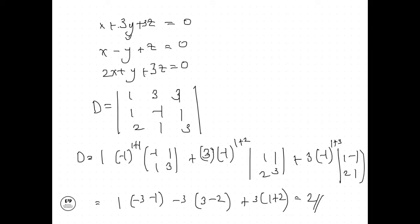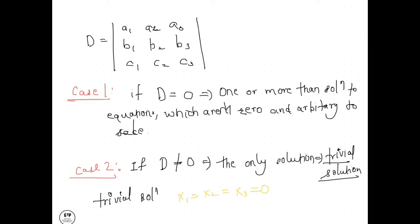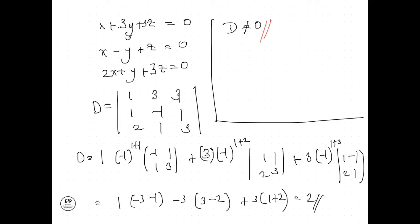So we can see that our determinant D does not vanish. So our D is not equal to zero. This is a very important point. From the previous slide, using case 2 over here, we can say that the only solution that we have is a trivial solution.